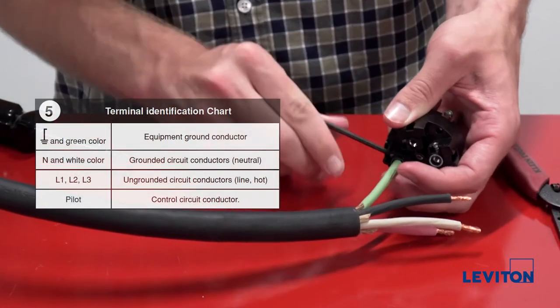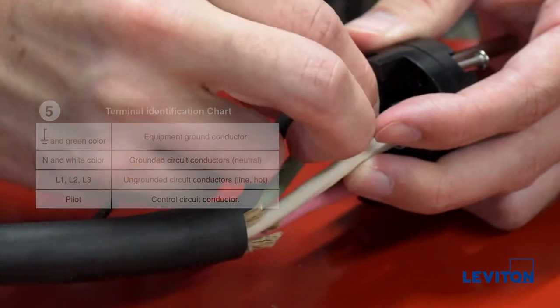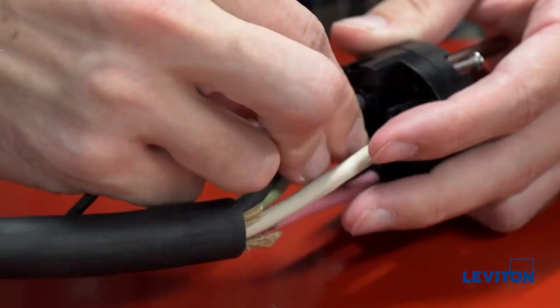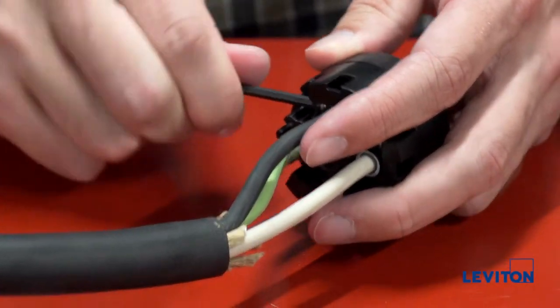If needed, use table 5 in the installation instructions to identify each terminal. Using the provided Allen key, tighten the terminal screws to 20 inch pounds and be careful not to over tighten.